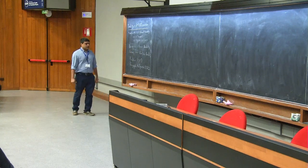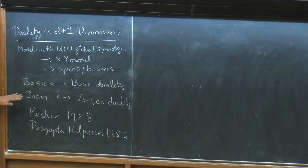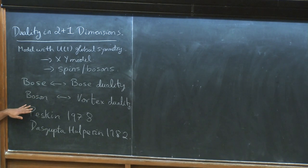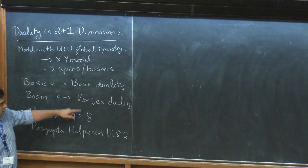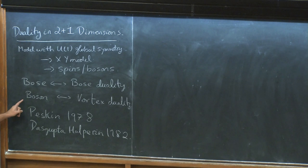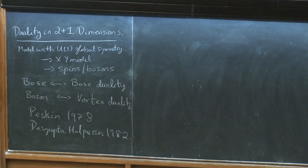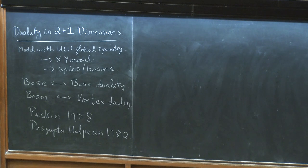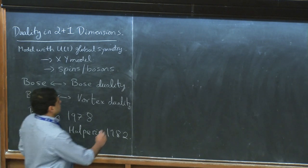In particular, what I want to do today is to discuss one of the earliest dualities known in the condensed matter literature in two dimensions: the duality between bosons in two spatial dimensions and vortices. This is extremely useful, and I want to emphasize a couple of applications.